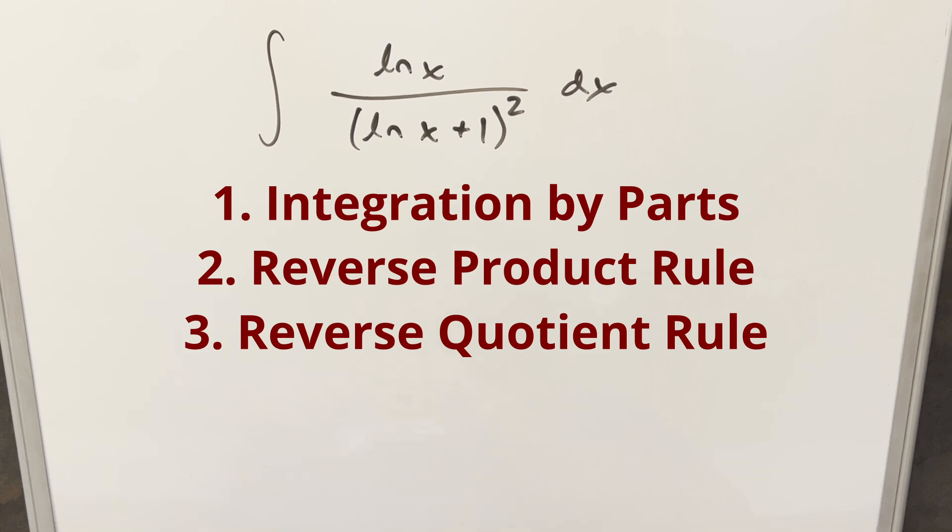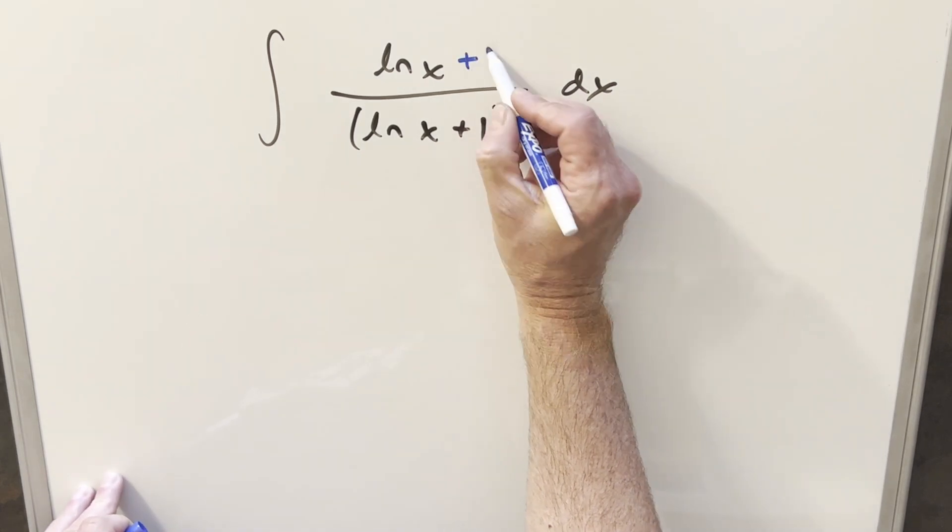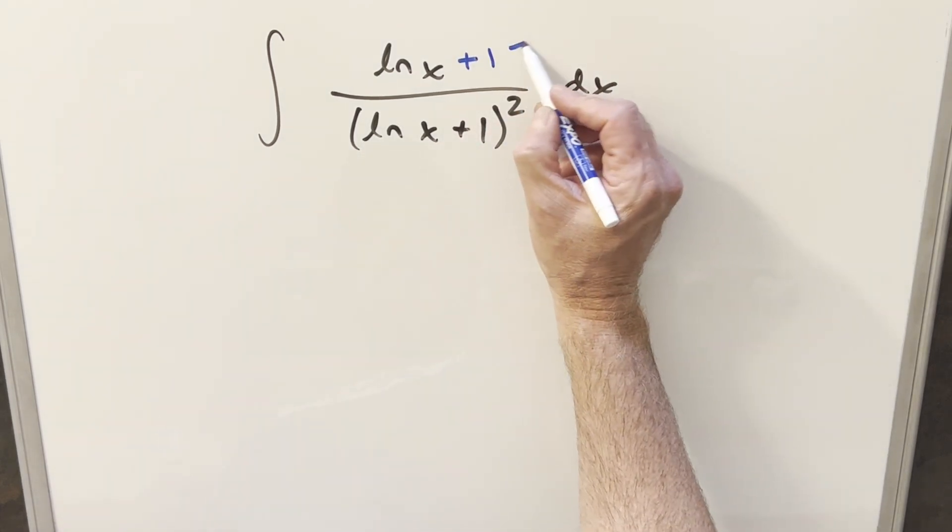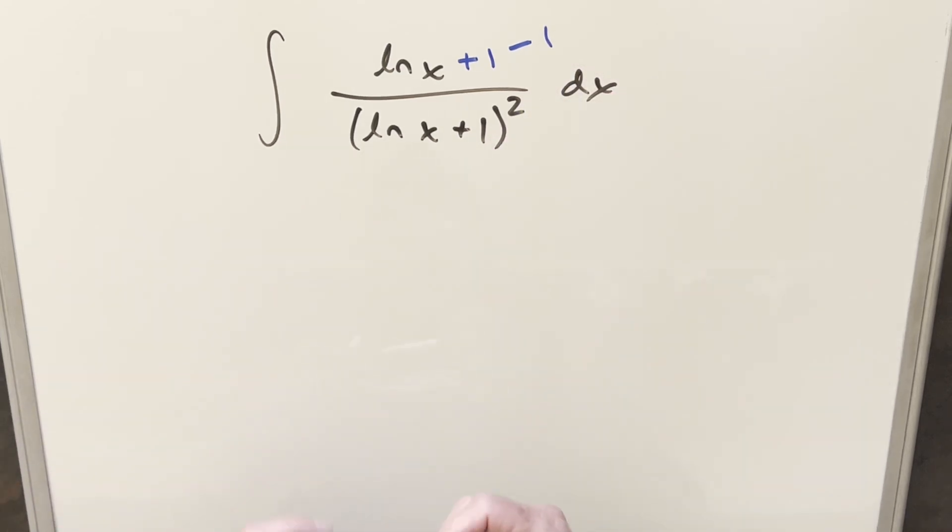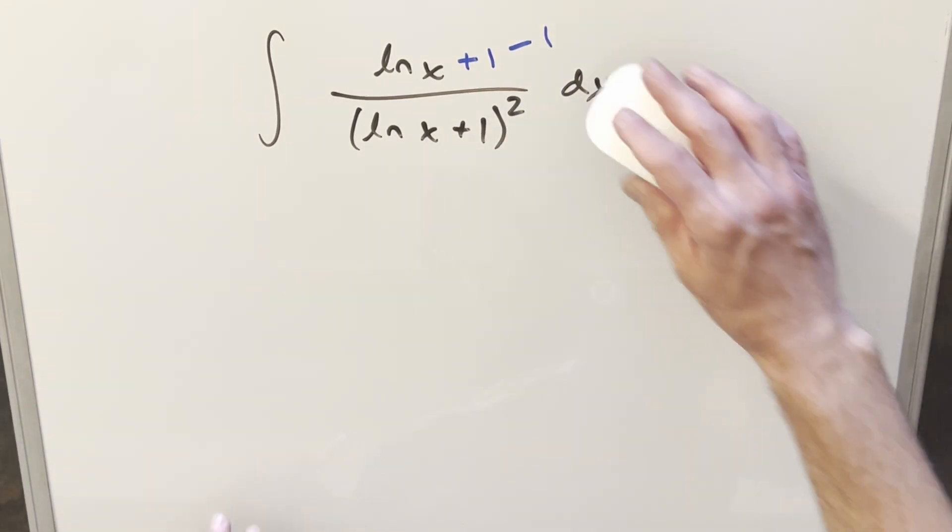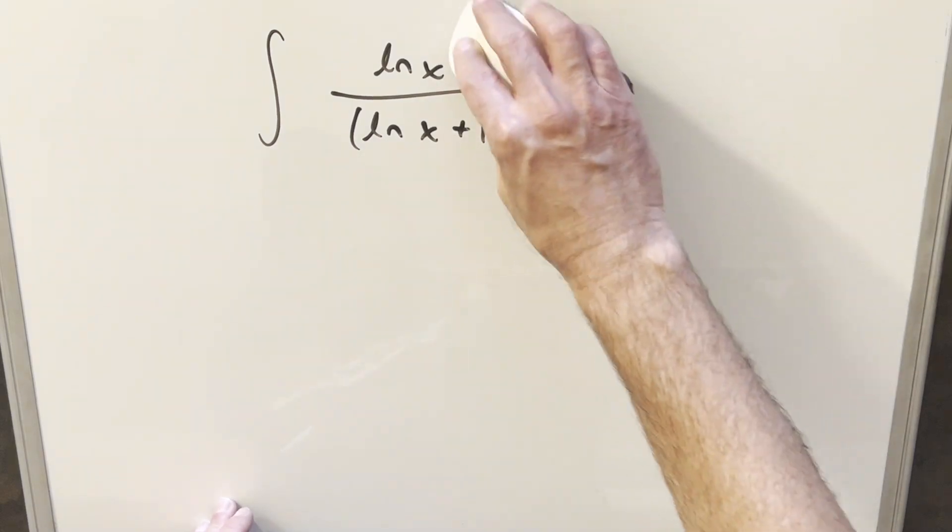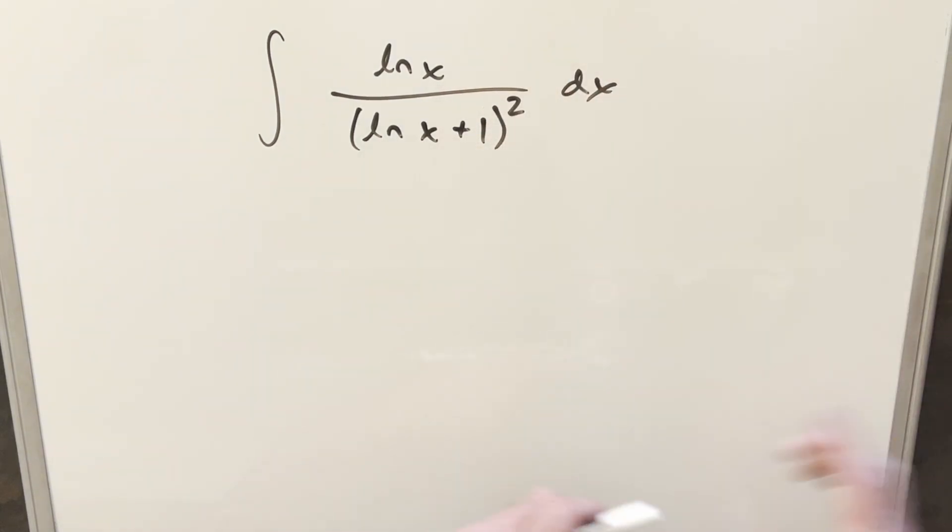I'm tempted to use the reverse product rule, because if you add a plus 1 right there, then you get cancellation. Then you need to add a minus 1, which allows us to split this into two fractions. But I basically just did that on a problem from the Vienna integration, and I don't like to repeat myself that much. So what I'm going to do instead is use quotient rule, and I haven't done that for a while.